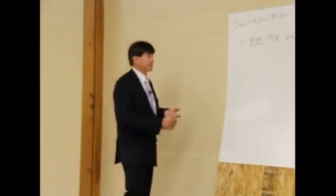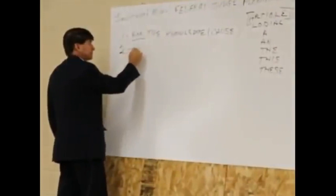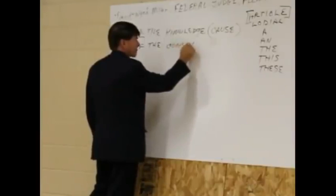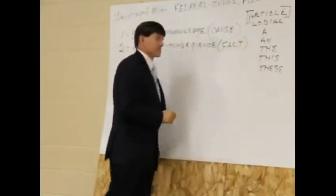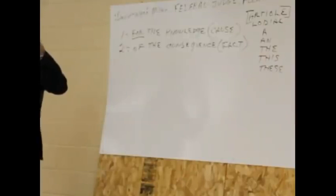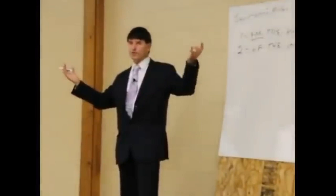The second part is there's a consequence. A consequence is a fact. In other words, I stand here and I look at this room, and I have knowledge. My knowledge allows me to understand people, tables, chairs, architectural structures.